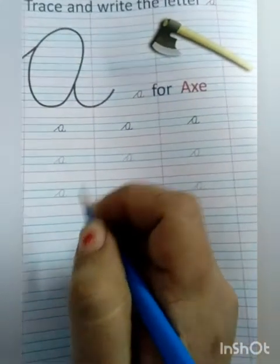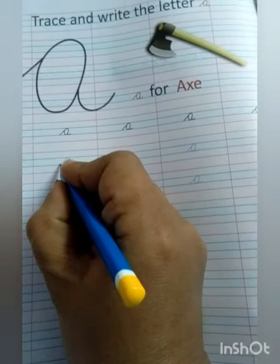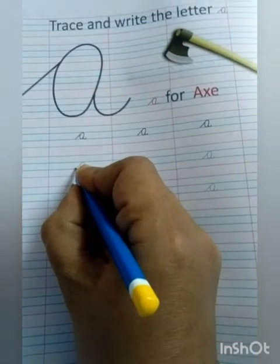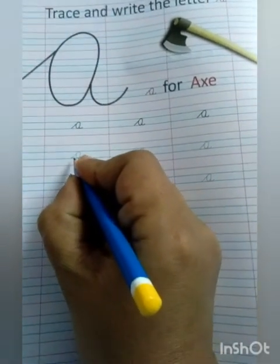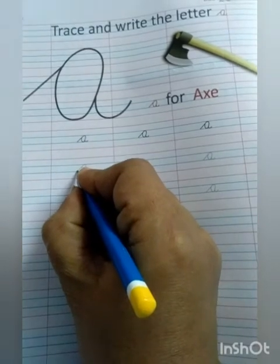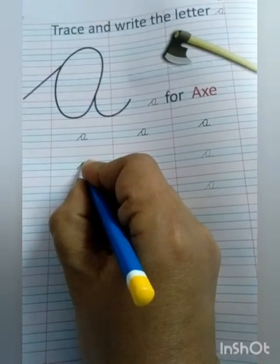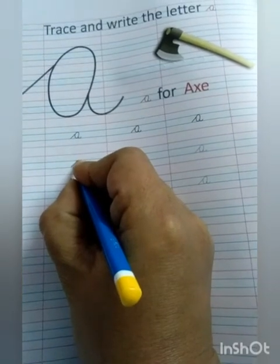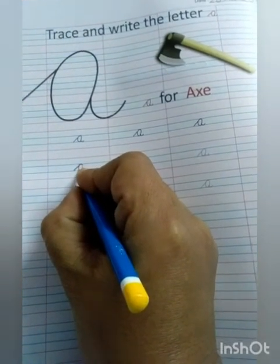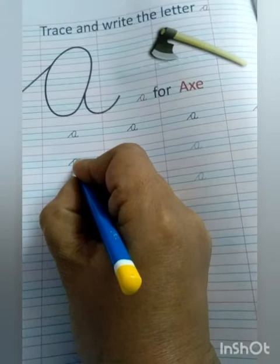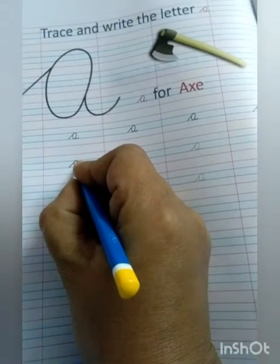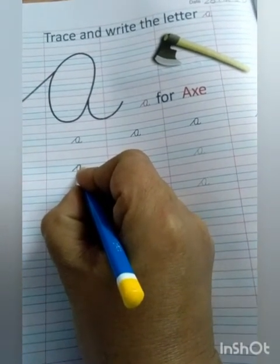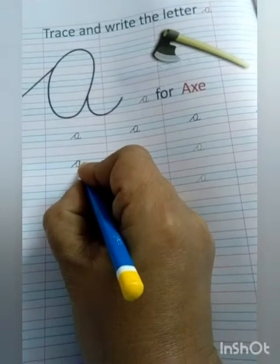First, trace these letters. Start from third line. Slant in line. Make a curve. Move back. Up, up. And come back. And make a tail.